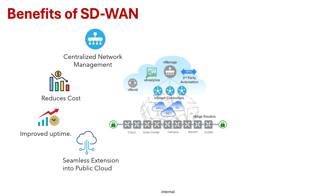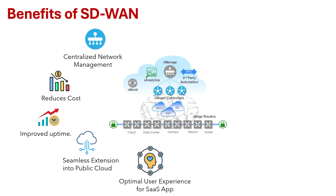This approach enhances the user experience for cloud-based applications. Another benefit is optimal user experience for SaaS applications — as organizations increasingly rely on SaaS applications like Office 365, Zoom, and Salesforce, SD-WAN ensures an optimal user experience by offering application-aware routing and dynamic path selection, resulting in better application performance and improved productivity.